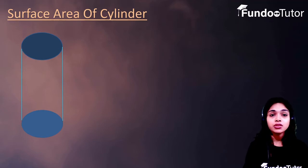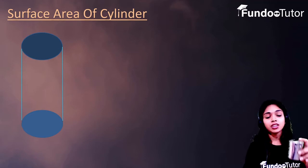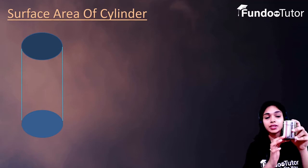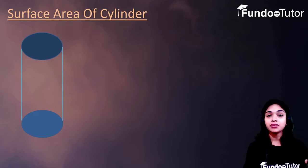And if we talk about the definition of cylinder, we can say that cylinder is a three-dimensional shape which is consisting of two parallel circular bases joined by this curved surface.